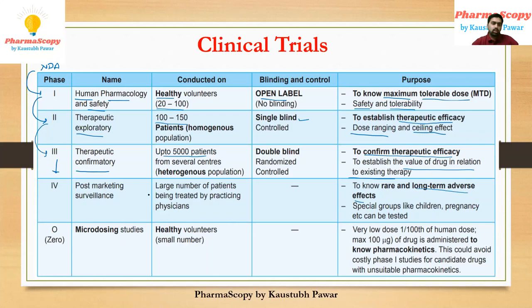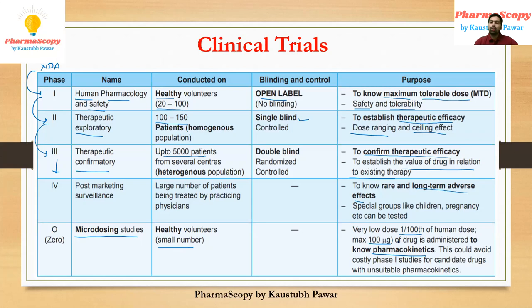Now let's see what is phase zero. Phase zero clinical trial is also called microdosing studies. This is done prior to phase one. After qualifying the animal studies, industries have a chance to do a phase zero clinical trial. In phase zero, they use a very small number of healthy volunteers, about 1 to 10. They give the drug in a very minute dose, which is around one-hundredth of the human dose — about maximum 100 micrograms — to know the pharmacokinetics and whether the new drug will qualify phase one. Phase zero is not mandatory by the FDA, but companies opt for it to know whether the new drug will qualify all clinical trials.